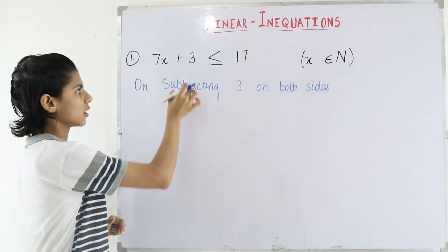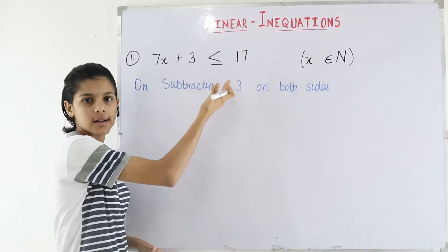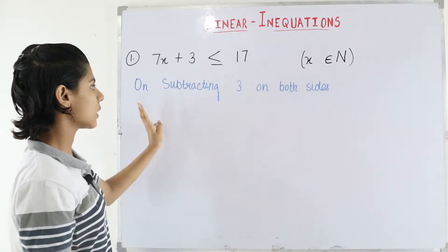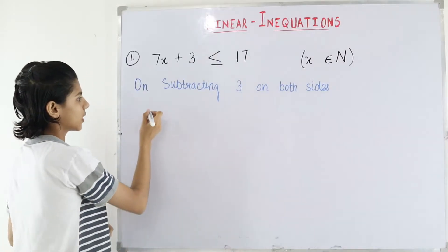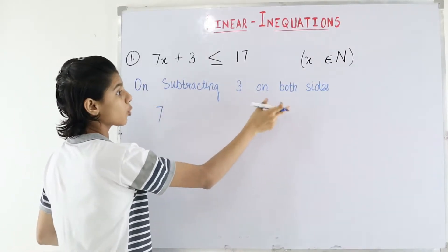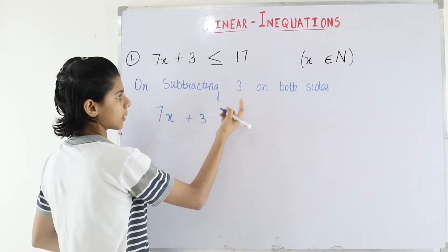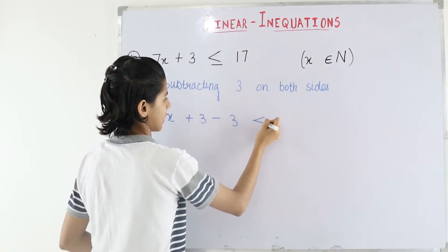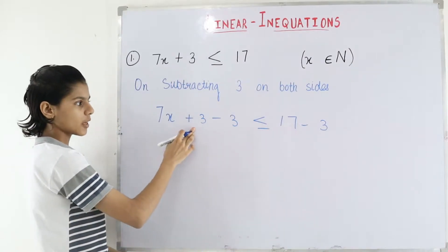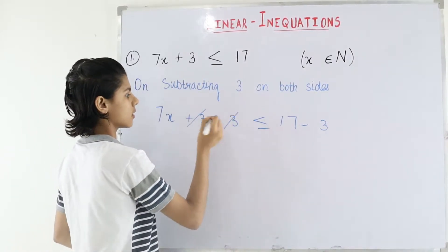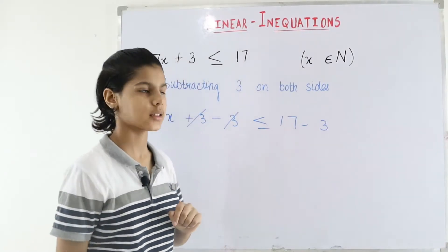We need to subtract. If we don't write the statement, in linear inequation you must write statements. So now we subtract. On subtracting 3 on both sides — so 7x plus 3 minus 3 gives us 7x, and 17 minus 3 is 14. The statement is 7x is less than or equal to 14.